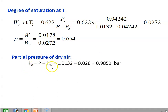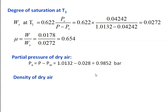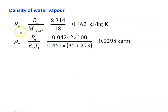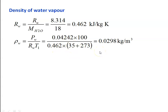Partial pressure of dry air: PA = P − Pw = 1.0132 − 0.028 = 0.9852 bar. Density of dry air: ρA = PA / (RA × T) = (0.9852 × 100) / (0.287 × (30 + 273)) = 1.1 kg/m³. For density of water vapor, the gas constant for water vapor: Rw = 8.314 / 18 = 0.462 kJ/kg·K. Density of water vapor: ρW = Pw / (Rw × T1) = (0.04242 × 100) / (0.462 × (35 + 273)) = 0.0298 kg/m³.